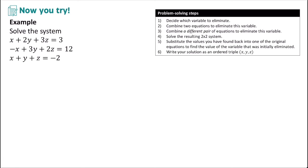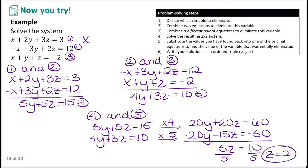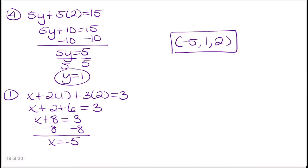Go ahead and pause the video and try this problem on your own. Here's the solution: I decided to eliminate x because it was already equal and opposite in some equations. Combining equations 1 and 2 gave equation 4: 5y plus 5z equals 15. Combining equations 2 and 3 gave equation 5: 4y plus 3z equals 10. Combining 4 and 5, I multiplied the top by 4 and the bottom by negative 5 to eliminate y, and solved to get z equals 2. Plugging z equals 2 into equation 4 gave y equals 1. Plugging y equals 1 and z equals 2 into equation 1 gave x equals negative 5. The solution is (negative 5, 1, 2).